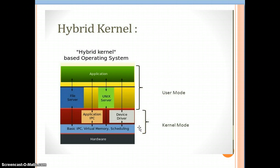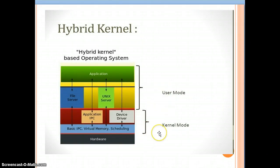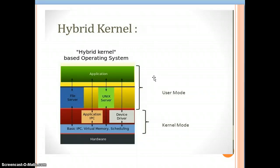This is the combined diagram of the hybrid kernel, which is formed by the monolithic kernel and the micro kernel based operating system. The user space and kernel space are present, with hardware below. In the user space, the application programs, library functions, file server, and Unix server are present. In the kernel mode, inter-process communication is carried out between applications and basic processes; device drivers, virtual memory, and scheduling are all carried out in the kernel mode.